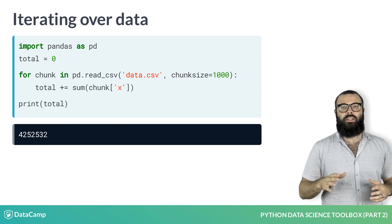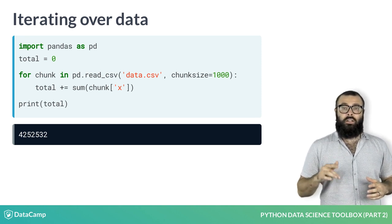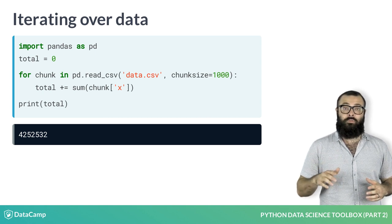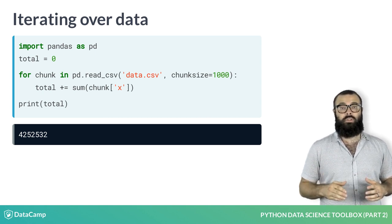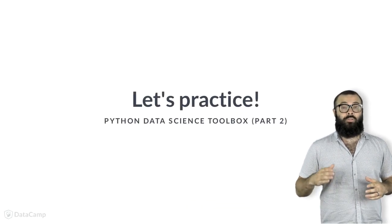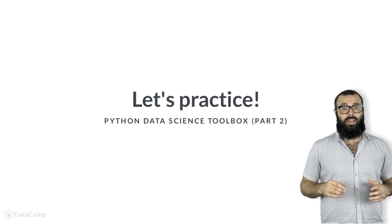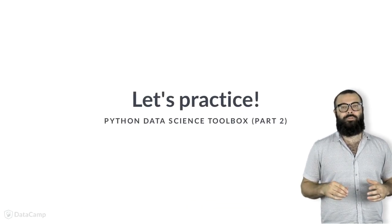Now things get really cool. You're going to use an iterator to load Twitter data in chunks and perform a similar computation that you did in the prequel to this course. Then, you're going to write a function that does the same. Happy iterating, friend.